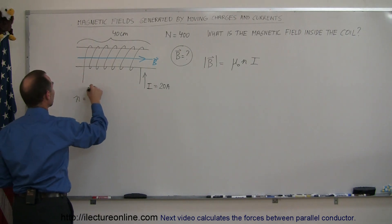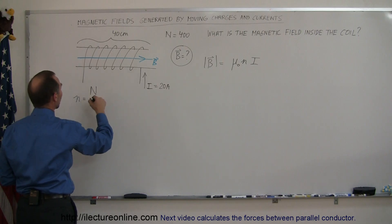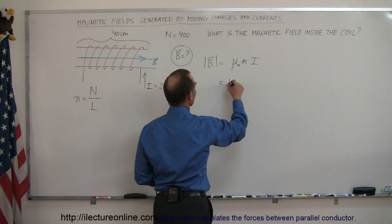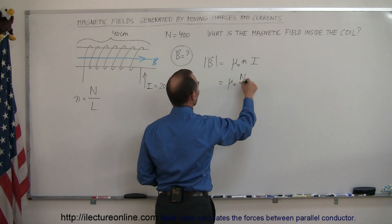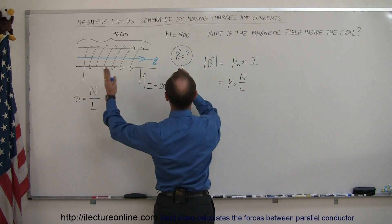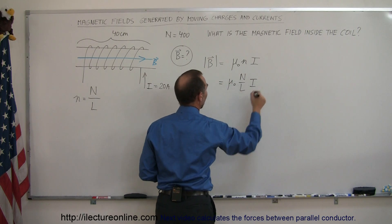So n is equal to the total number of loops or coils divided by the total length of this coil, L. So we can then say that this is equal to μ₀ times big N over L, big N being the number of turns or total loops, L being the length of the coil, times the current I.